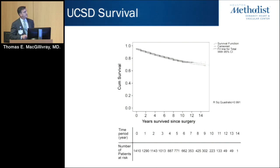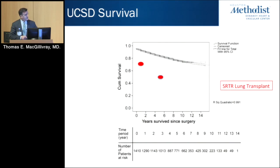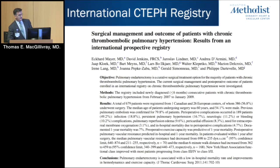In terms of long-term survival, it is excellent, certainly compared to the natural history of this disease. If you compare that to the survival of patients who receive lung transplants for pulmonary hypertension, the one- and five-year survival for lung transplant shows that pulmonary thromboendarterectomy appears to be a superior treatment for pulmonary hypertension in these patients.